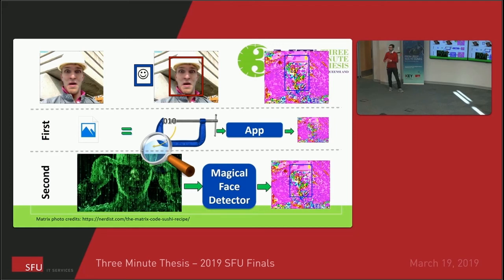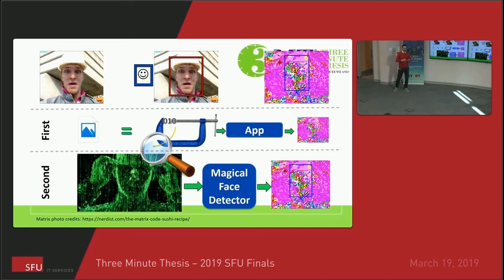Now we have the scrambled faces. We want to find the location of faces in those images. Inspired by the movie Matrix — when we had the digital rain in that movie — we found out that if we rearrange the zeros and ones in a specific way, we notice some specific patterns that represent faces.